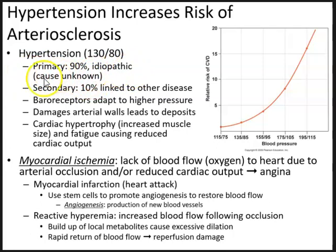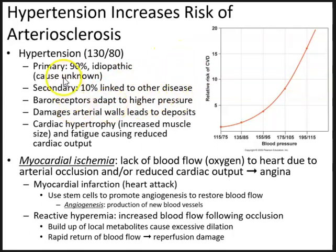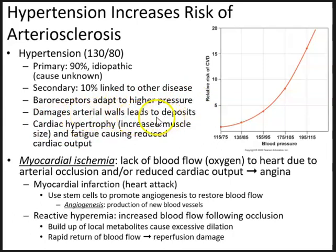Secondary hypertension makes up about 10% and is linked to other underlying conditions, such as pregnancy — for example, gestational hypertension. Prolonged hypertension can be dangerous because the baroreceptors we discussed will eventually adapt to the higher pressure. Prolonged hypertension can also cause damage to arterial walls and lead to deposits, causing atherosclerosis.